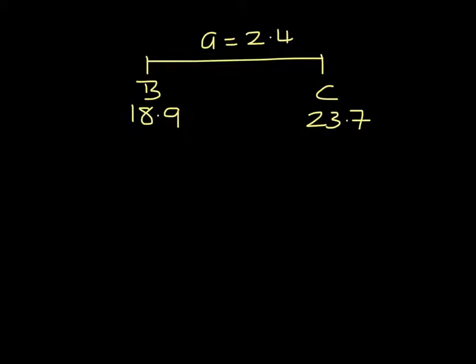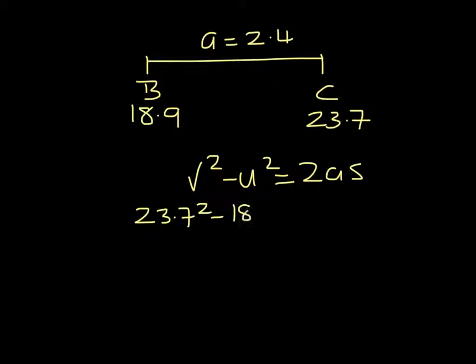So I'm going to use V squared minus U squared equals 2A, S. So 23.7 squared minus 18.9 squared equals 2 times 2.4 times S. Where S, in this case, is the distance B, C.